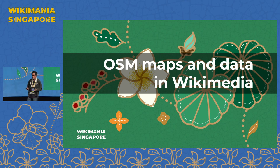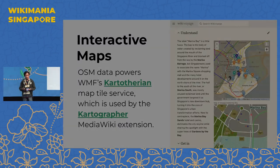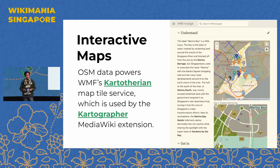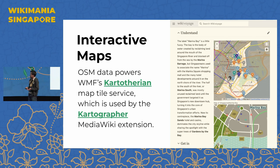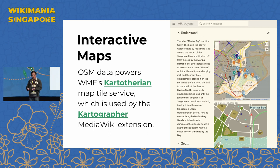We make extensive use of OpenStreetMap here in Wikimedia. For example, if you go to a typical Wikivoyage page, there's usually an interactive map you can use to pan around and look at various points of interest. Here we have the Wikivoyage page for Marina Bay, and the interactive map at the top is based on OpenStreetMap. So if you edit things in OpenStreetMap, that eventually gets reflected on the interactive map you see in Wikivoyage. This is powered by the Cartotherian map tile service and the Kartographer MediaWiki extension.